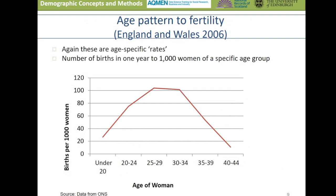We can also see age patterns to fertility. This is the age pattern of fertility in England and Wales in 2006, and we can see a peak in fertility rates between the ages of 25 and 35 of around 100 births per thousand women. Age structure is key to the experience of many demographic events — fertility, mortality, and migration — and we can use this information to predict how numbers of births, deaths, and migration might change over time.